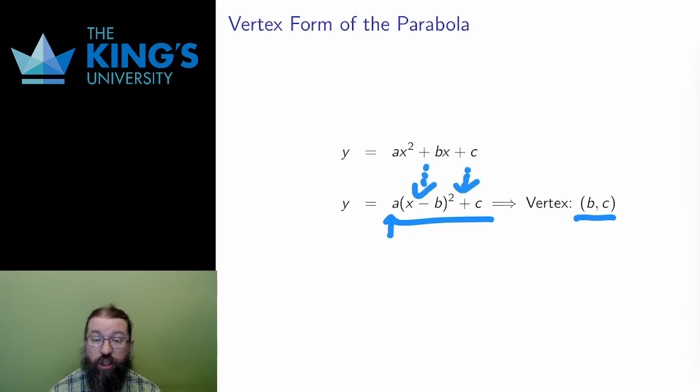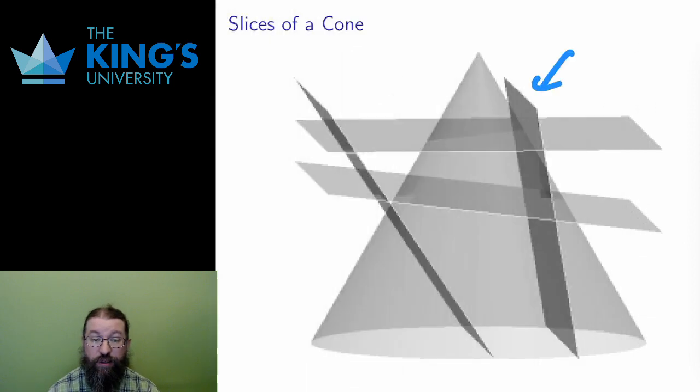Finally, the last conic is the hyperbola. As a slice of a cone, it is a slice that is steeper than the angle of the cone. It is this slice in the diagram.